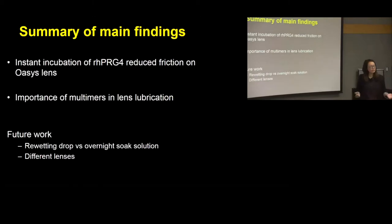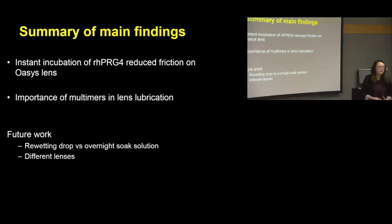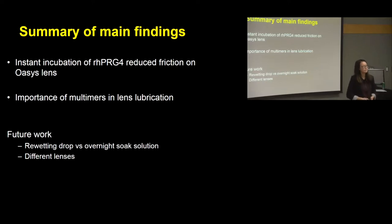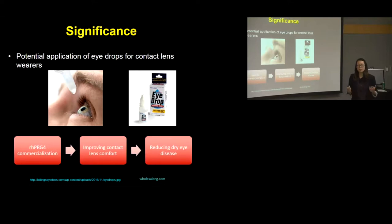The summary of my main findings so far: instant incubation of RH-PRG4 reduced friction on the AccuView Oasis lens, and it is important to have multimers present as they affect lens lubrication. In future work, I'll continue with the soak solution test sequence and complete all testing with the two other lens types. The significance of this work is the potential application of RH-PRG4 eye drops for contact lens wearers, with the ultimate goal of commercializing RH-PRG4 to improve contact lens comfort and reduce dry eye disease.